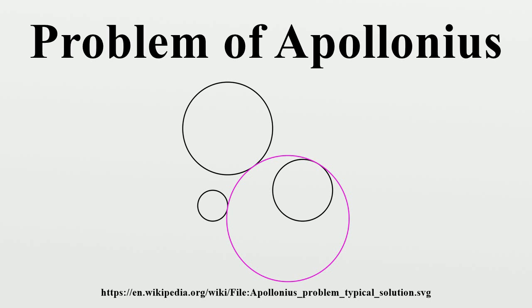Solving Apollonius' problem iteratively in this case leads to the Apollonian gasket, which is one of the earliest fractals to be described in print, and is important in number theory via Ford circles and the Hardy-Littlewood circle method.